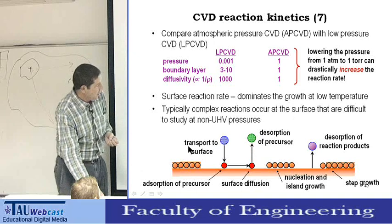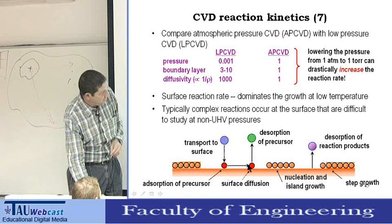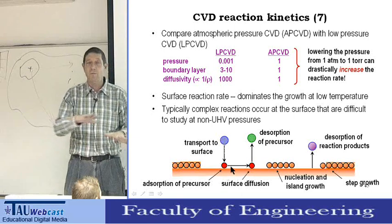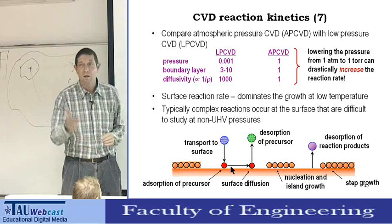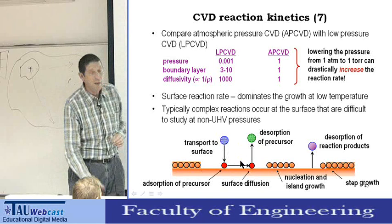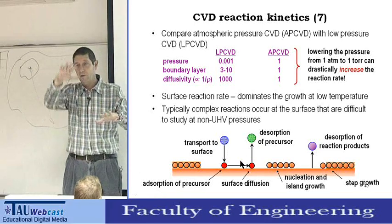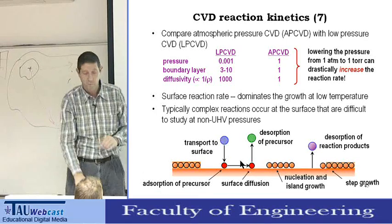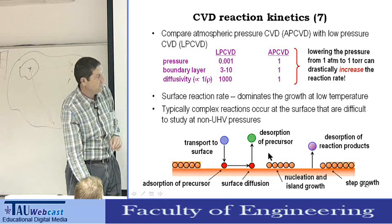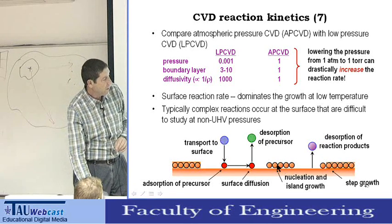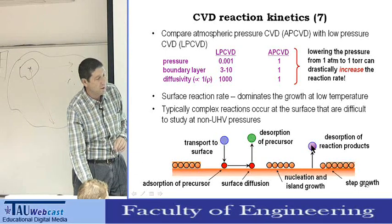Typically it's a complex process: you have transport of species to the surface — shown in blue — then adhesion, and then the molecules start to diffuse on the surface. Usually they do, because it's high temperature, but not too high, so we have diffusion only on the surface, not into the bulk. In some cases we can have desorption of the precursor; if not, we have nucleation, island formation, reaction, and emission of reaction products.